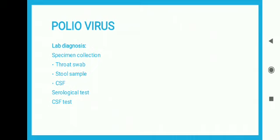For the laboratory diagnosis of poliovirus, we collect a specimen depending on the clinically apparent disease. Specimens can include a throat swab, stool sample, or CSF. Serological tests and CSF tests are performed for this purpose.